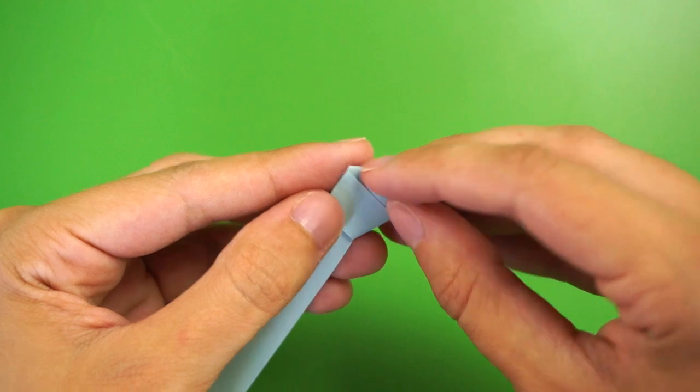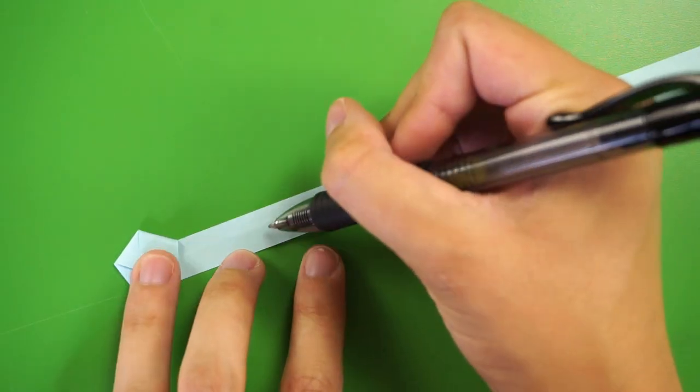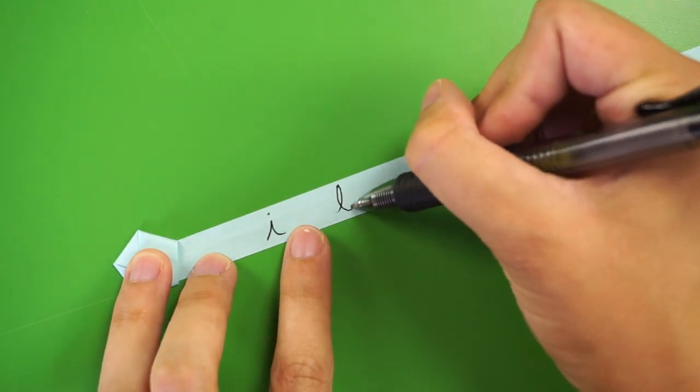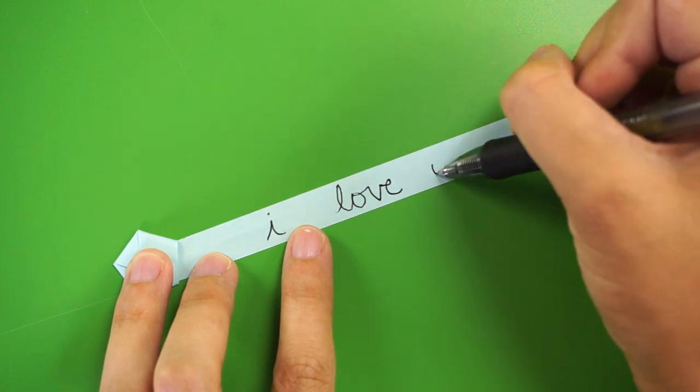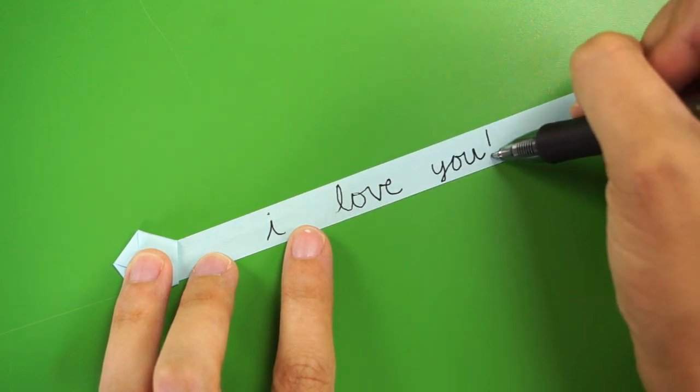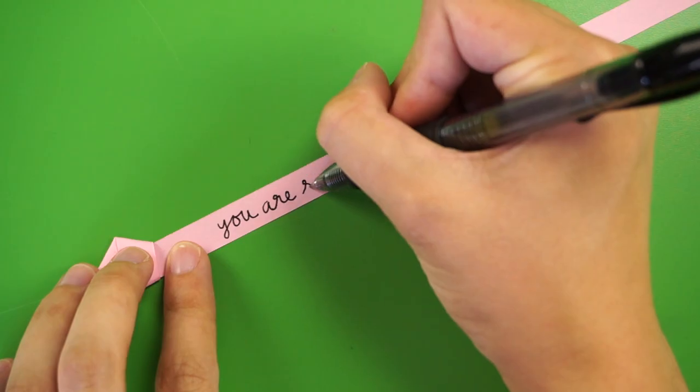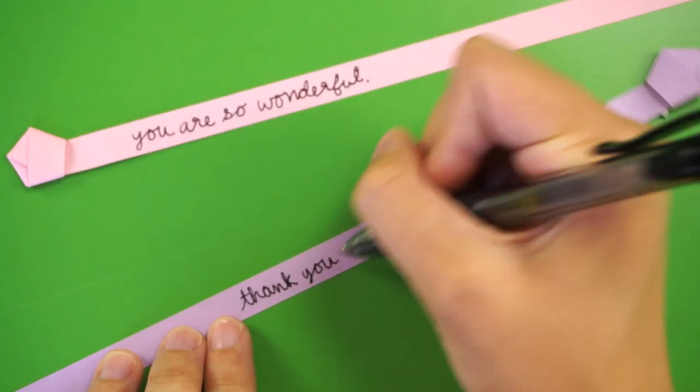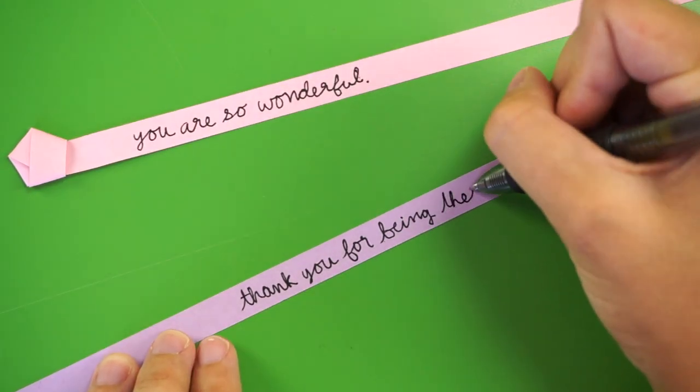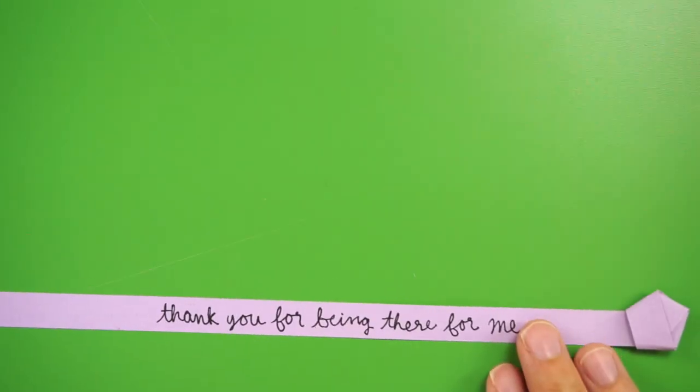Here's the important part. Write a note for someone on the paper so your message will be inside the star once it's folded up. I'm writing down quick little messages of love, but since it can sometimes be difficult to sum that up, I'll probably end up making a handful of these for each person.